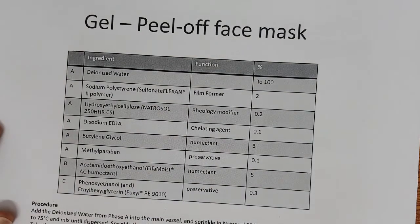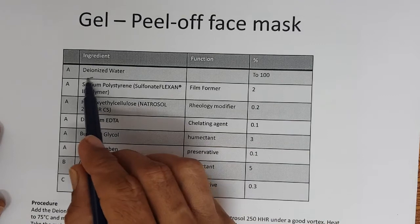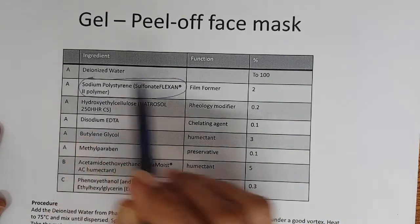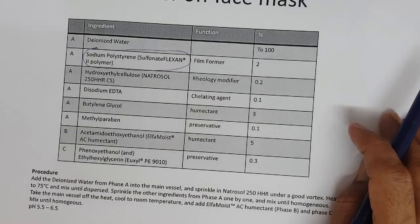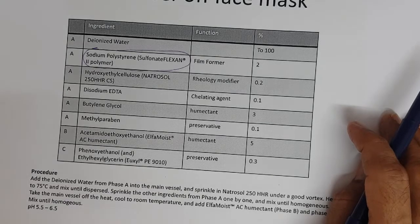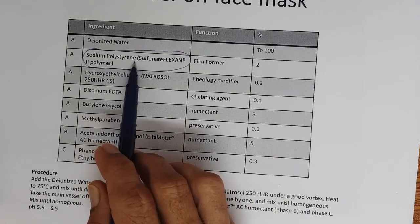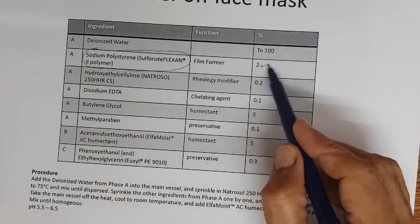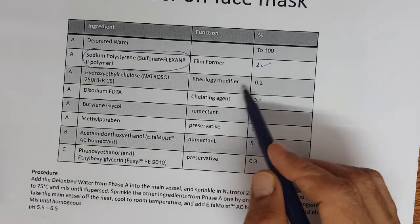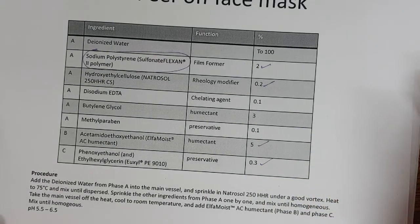Another gel peel-off mask uses sodium polystyrene sulfonate instead of PVA as the film former. Recently many new film formers for peel-off face masks are coming to the market. This formula uses 2% of this film former with natrosol (hydroxyethyl cellulose) as a rheology modifier, humectant, and preservative — a very simple formula.